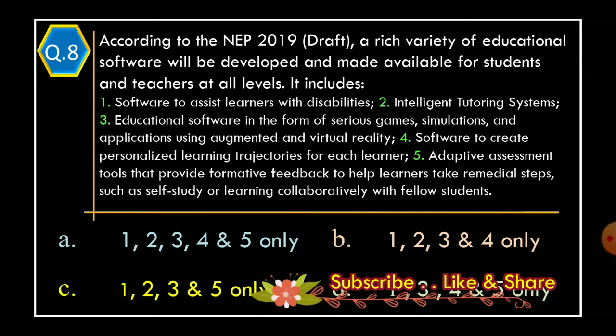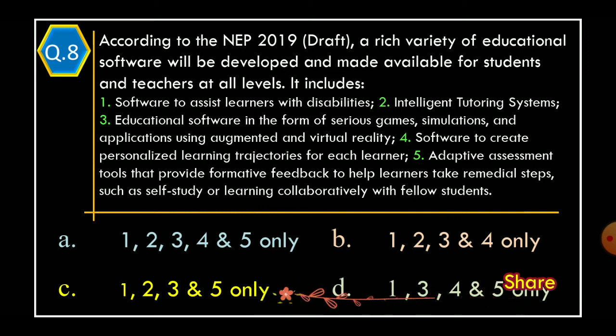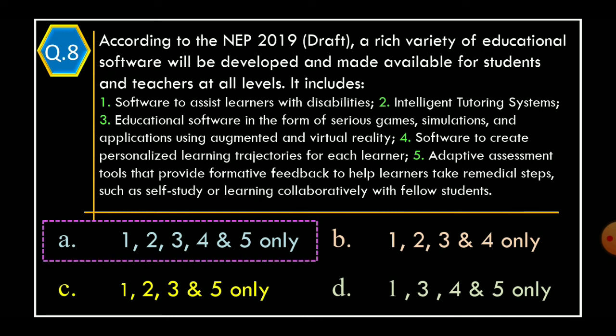Question 8. According to the NEP 2019 draft, a rich variety of educational software will be developed and made available for students and teachers at all levels. It includes: Statement 1: Software to assist learners with disabilities. Statement 2: Intelligent tutoring system. Statement 3: Educational software in the form of serious games, simulations and applications using augmented and virtual reality. Statement 4: Software to create personalized learning trajectories for each learner. Statement 5: Adaptive assessment tools that provide formative feedback to help learners take remedial steps such as self-study or learning collaboratively with fellow students. The correct option is Option A: Statements 1, 2, 3, 4, and 5 only.